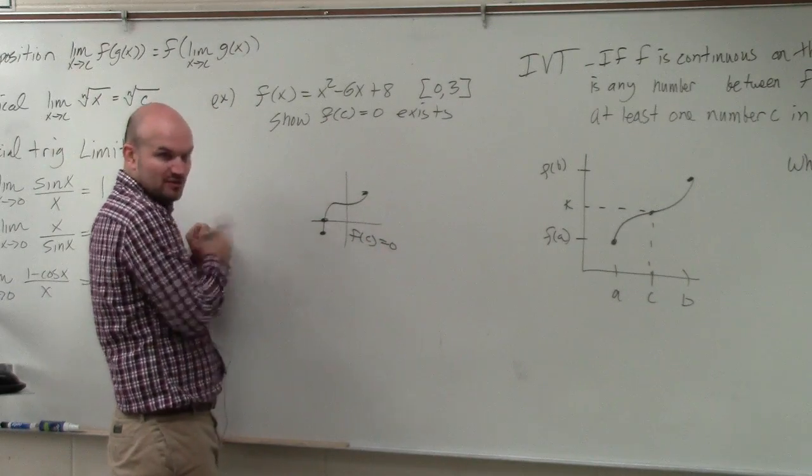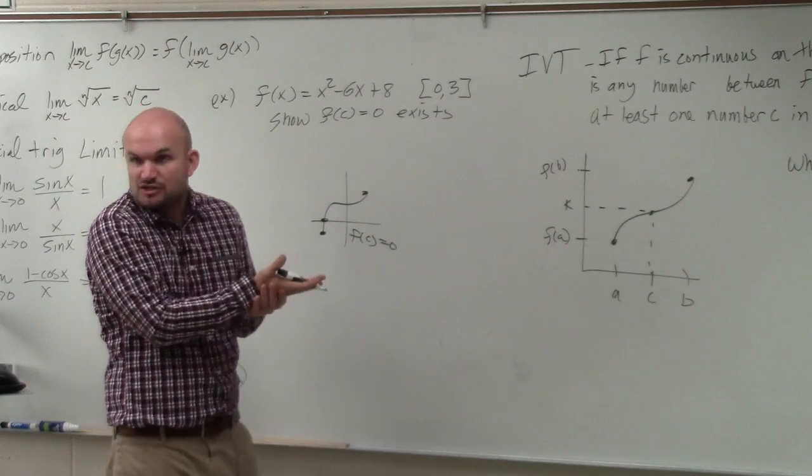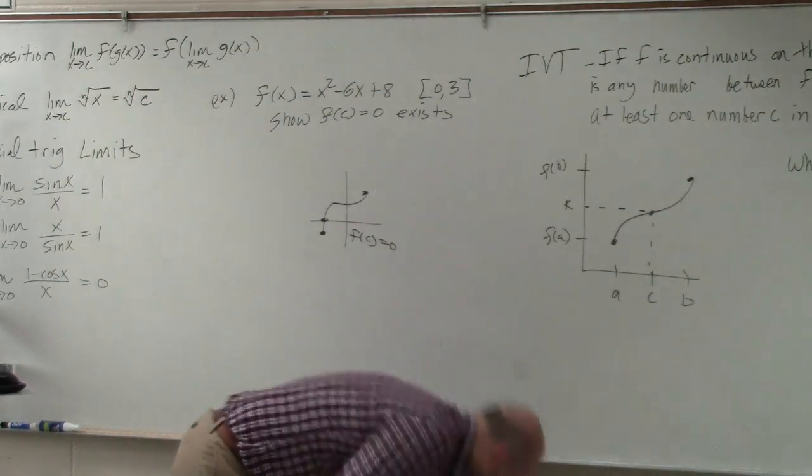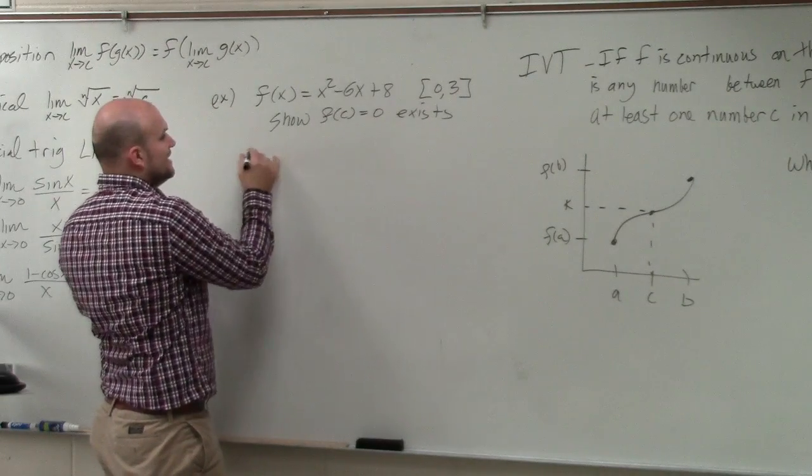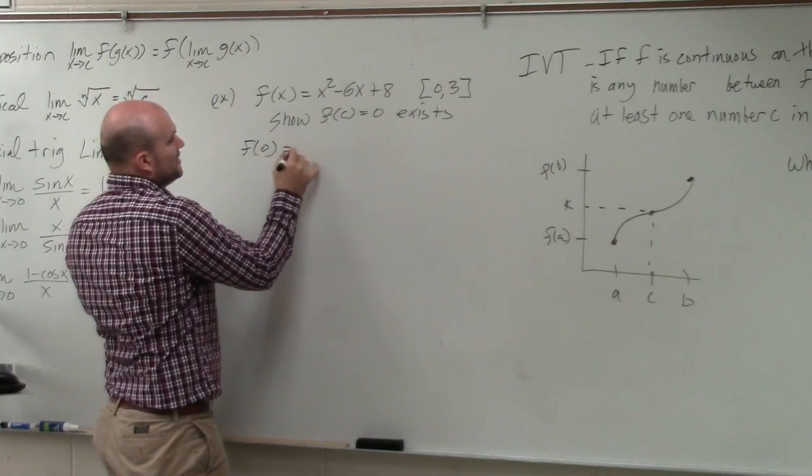Those are your critical numbers, your zeros of a function. To show that f(c) exists, what we need to do is evaluate the function on both intervals.